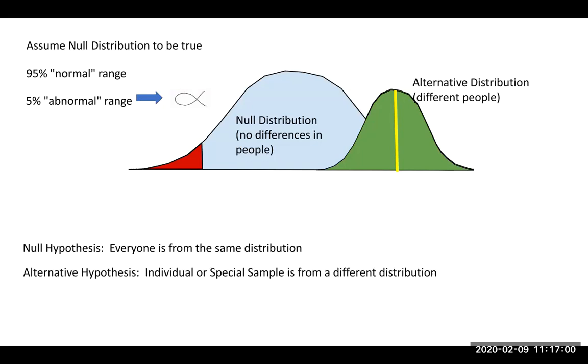So our null hypothesis, then, is that everyone is from the blue distribution. We always start with this idea that everybody's the same until proven otherwise. Our alternative hypothesis is that the individual that we're looking at, or if we have a sample, then that special sample we're looking at is from a different distribution. In this case, it would be green. And so what we're doing when we're running inferential statistics is we're looking at where your score is and seeing which one is more likely. Is it more likely that you're from the blue distribution or is it more likely that you're from the green distribution?